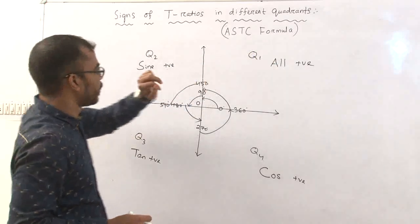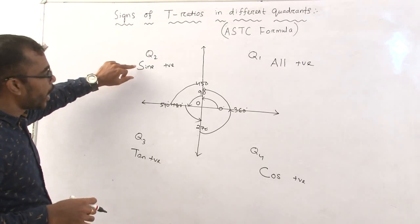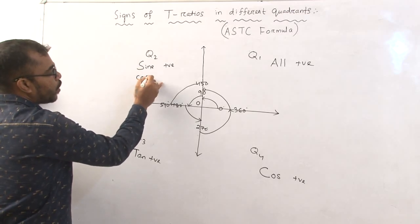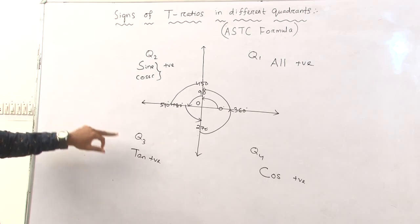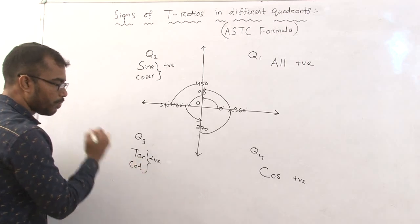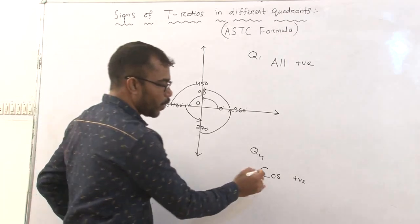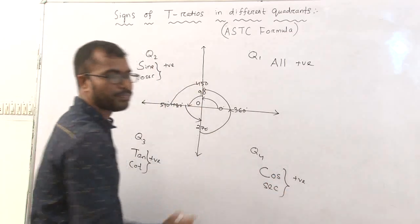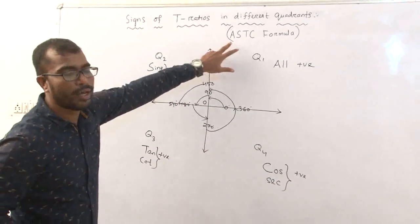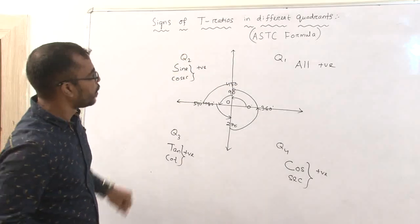In the first quadrant, all t-ratios are positive. In Q2, sine is positive. Since sine is related to cosec, cosec is also positive. In Q3, tan is positive, and since tan is related to cot, both tan and cot are positive. In the fourth quadrant, cos is related to sec, so both cos and sec are positive. This is how we detect which values are positive or negative using the ASTC diagram.